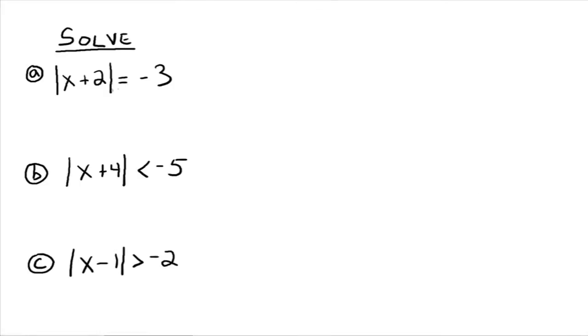The absolute value of x plus 2 equals negative 3. You're looking for numbers that when you plug in for x and take the absolute value, you get negative 3. But no matter what number we plug in for x, the left-hand side is always going to be a positive number, because absolute value means distance, and distance gives a positive value. So there's no number we can plug in that makes this true. There's no solution to this equation.